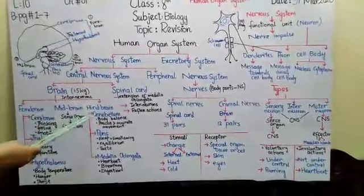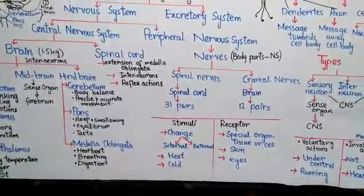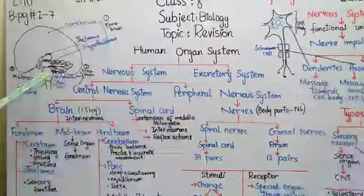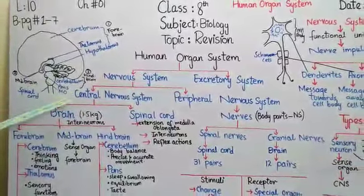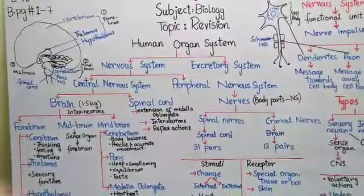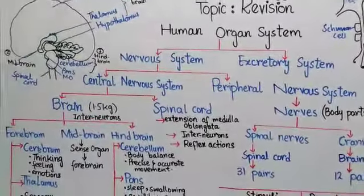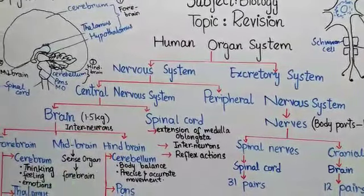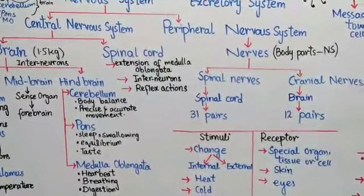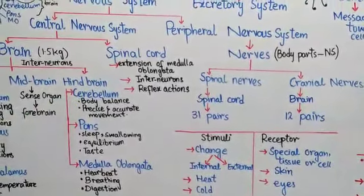The last part of the brain is the hindbrain, which consists of three parts: cerebellum, pons, and medulla oblongata. As you can see in the diagram, the cerebellum is shown at the back, pons is in the middle portion, and MO refers to medulla oblongata at the lower portion. The cerebellum lies under the back part of the cerebrum. It controls body balance and coordinates precise and accurate body movement.